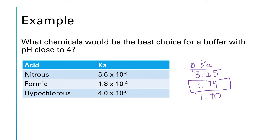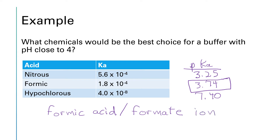A buffer has to have a weak acid and its conjugate base, so we're looking for formic acid and its conjugate base, which would be the formate ion — the -ic acid becomes the -ate ion. We can't have just a bottle of negative ions, so when you go into the stock room you'd look for something like sodium formate or potassium formate, just something to make that an electrically neutral compound.